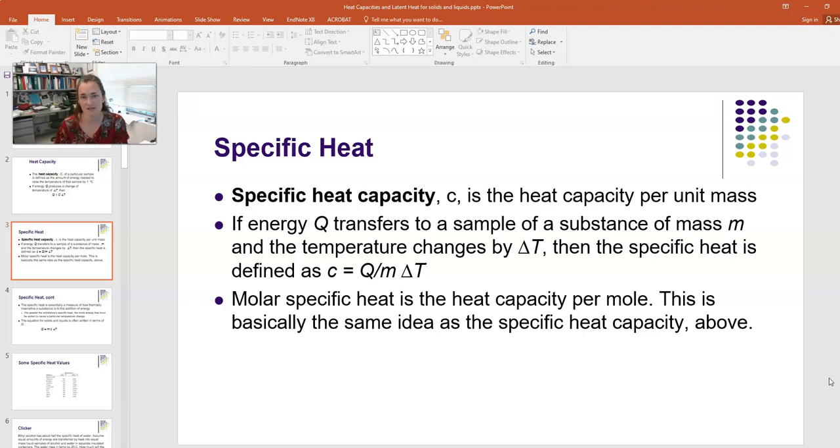The specific heat capacity is usually symbolized by lowercase c. This is the heat capacity per unit mass, normalized for the amount of substance. If energy Q is transferred to or from a substance of mass m causing a temperature change delta T, then the specific heat c equals Q divided by m delta T.